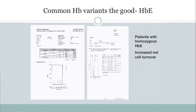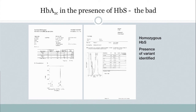Here is a common hemoglobin variant: hemoglobin E, widely distributed in Thailand and Malaysia. On the left you can see a homozygous hemoglobin E pattern; on the right, the same on the D-100 analyzer. Patients with homozygous E have increased red cell turnover, so you can expect decreased A1c. The difficulty is they should theoretically have no A1c, because they have no hemoglobin A.